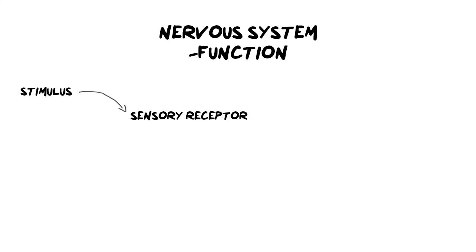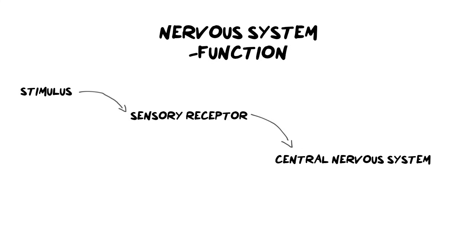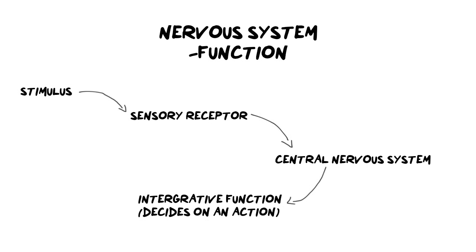After that, the information needs to be sent somewhere. In this diagram we are going to focus on the central nervous system, which is responsible for taking in this information and making a decision. When we speak about these decisions from the central nervous system, we call it its integrative function. In other words, your central nervous system — your brain and spinal cord — decides what's going to happen next.